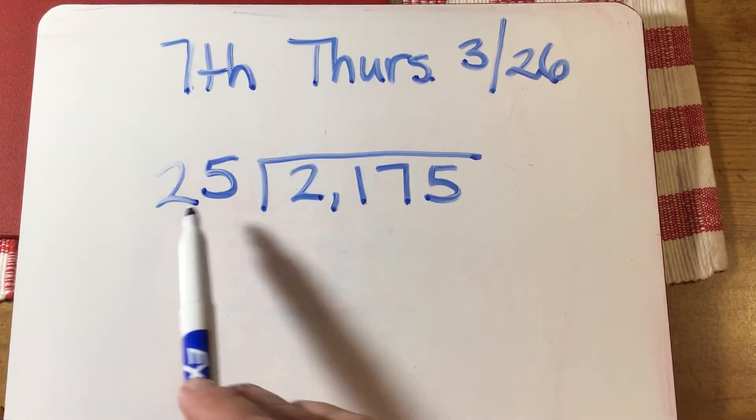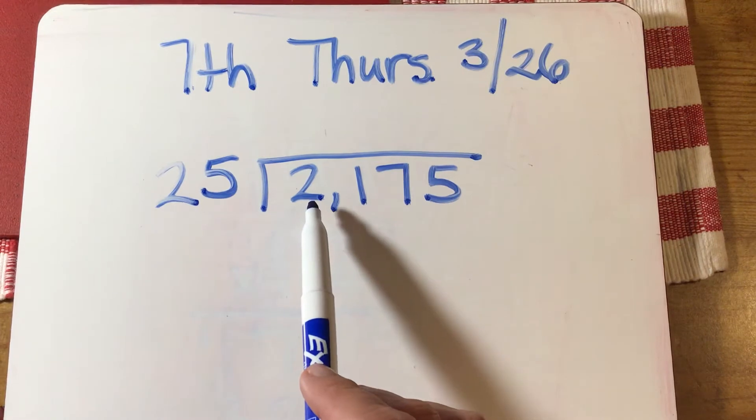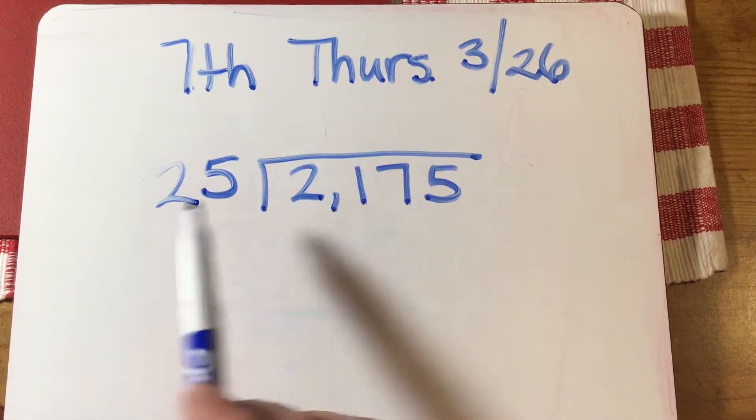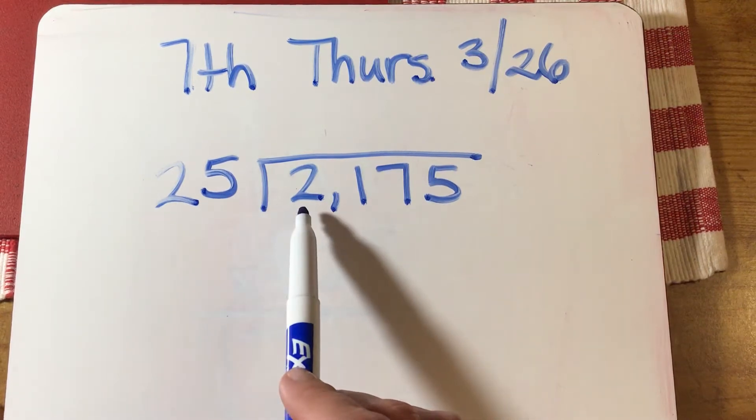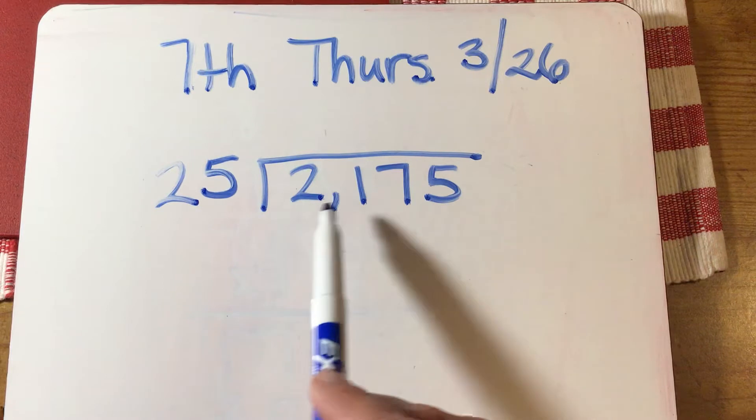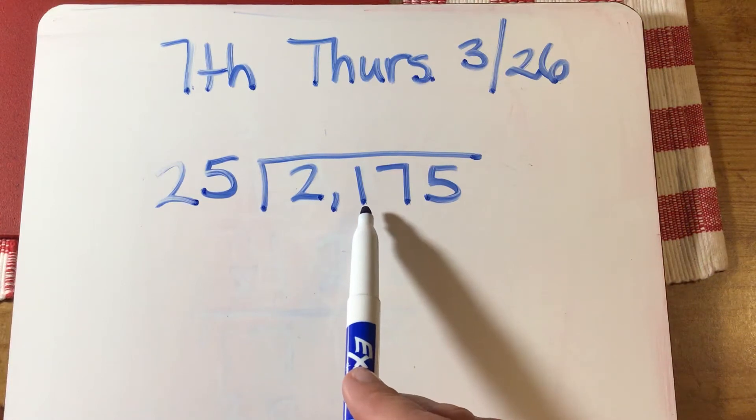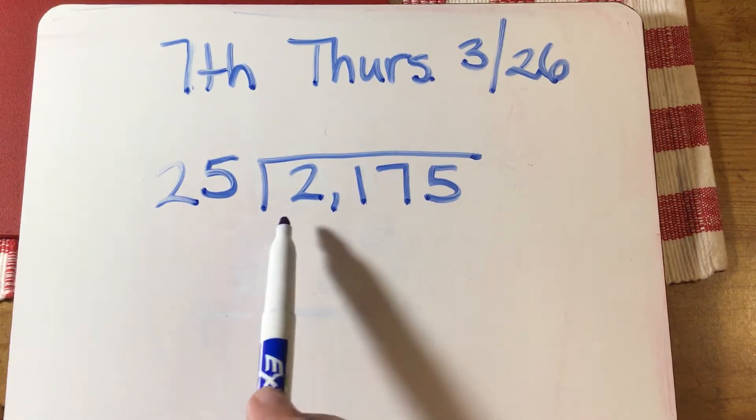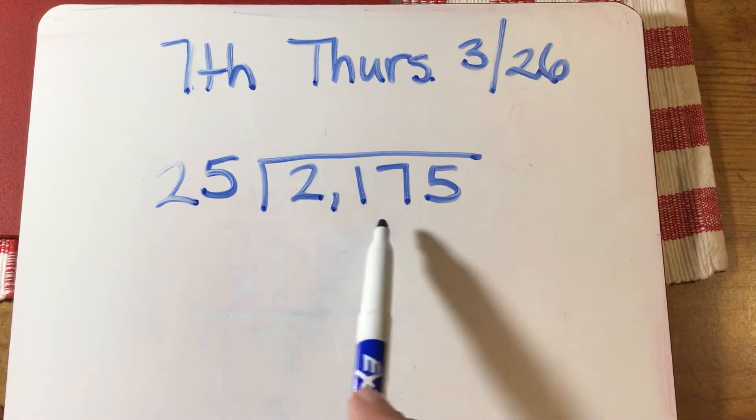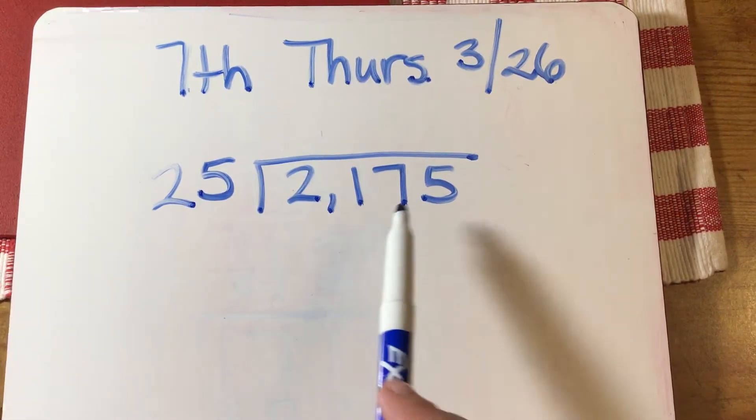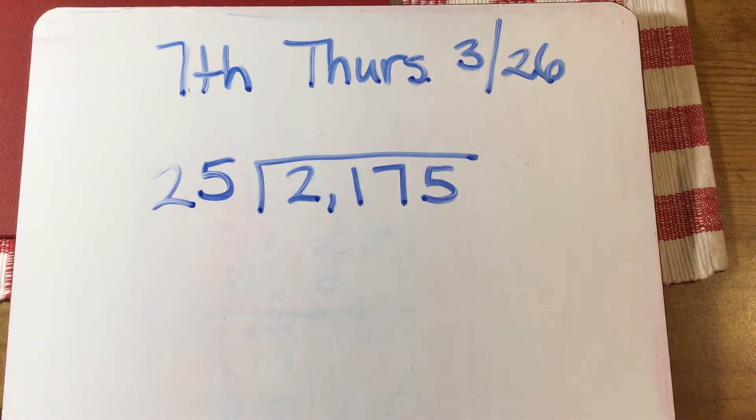Okay, so 25. I want to look at the very first number in the largest place value digit, which is 2. Can 25 go into 2? Can 25 times something equal 2? And it can't. So now I've got to look at this digit along with this digit. Can 25 times something equal 21? And no, it can't. So now I've got to look at 217. 25 times what gets me close to 217, but I cannot go over 217? And it happens to be 8.